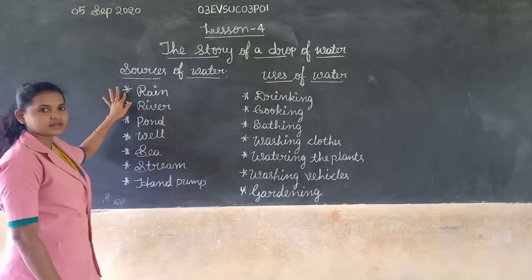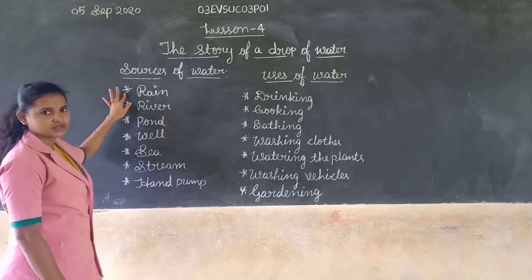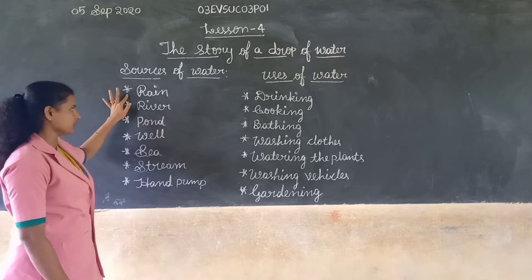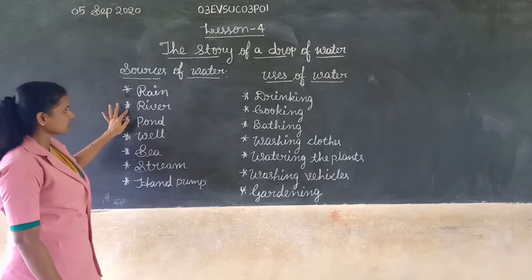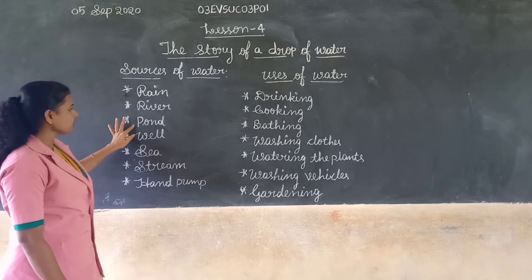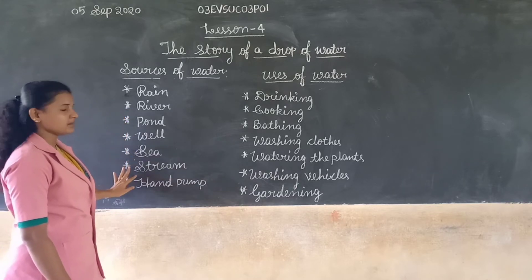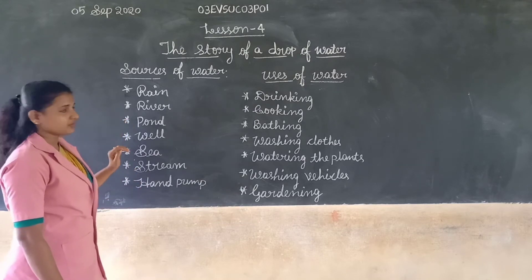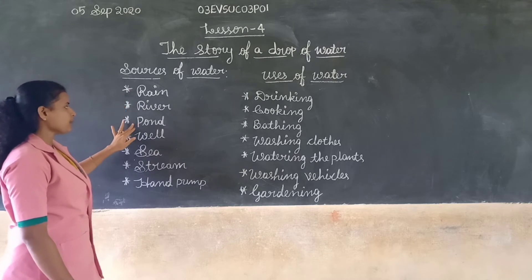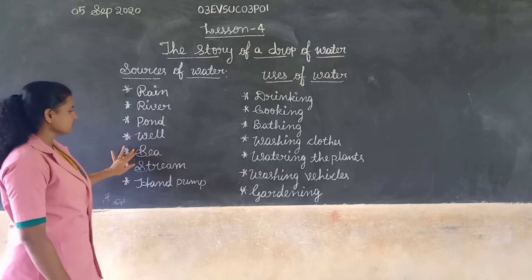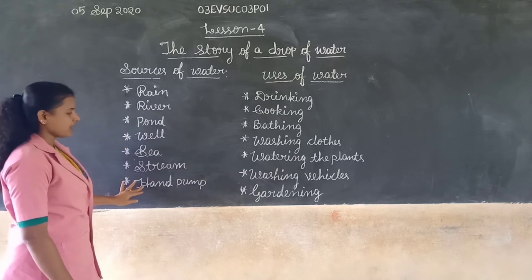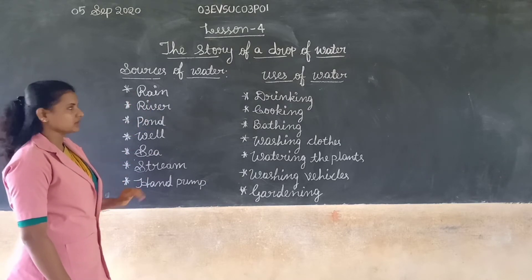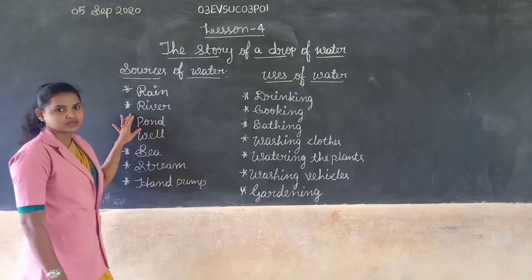Rain fills ponds, rivers, and seas. Other different sources of water include river, pond, well, sea, stream, and hand pump. This is about sources of water.